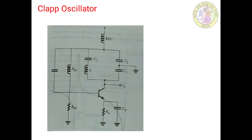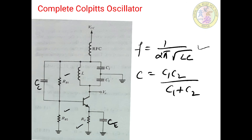We have another oscillator circuit called the Clapp oscillator. In the previous Colpitts oscillator, the frequency of oscillation completely depends on capacitors C1 and C2. But these two capacitors are shunted by the stray capacitance in the transistors, causing the output frequency to differ from the designed frequency value. This is the demerit of the Colpitts oscillator.